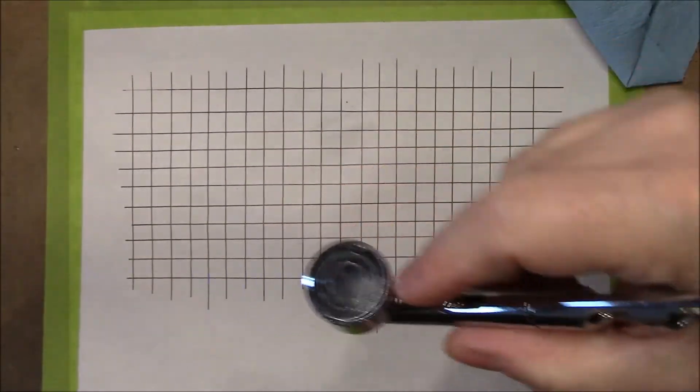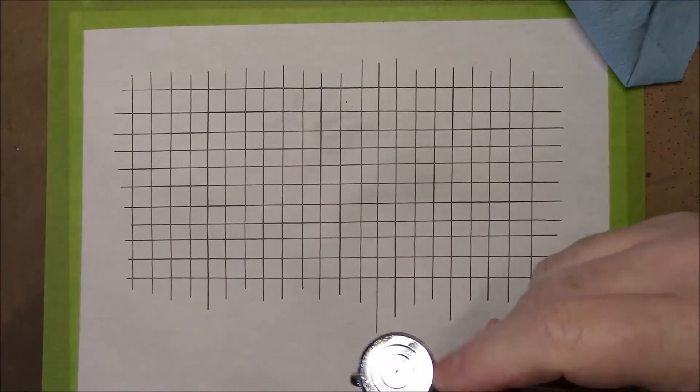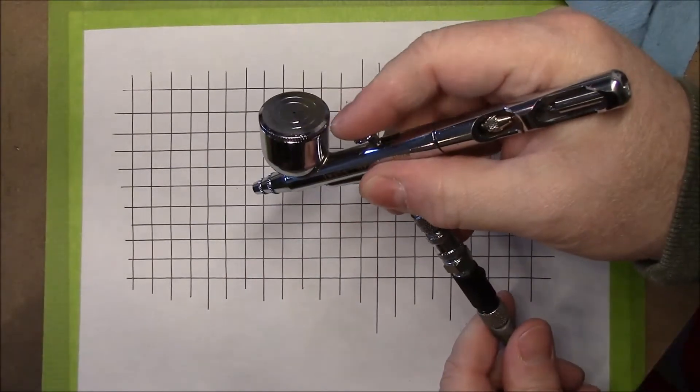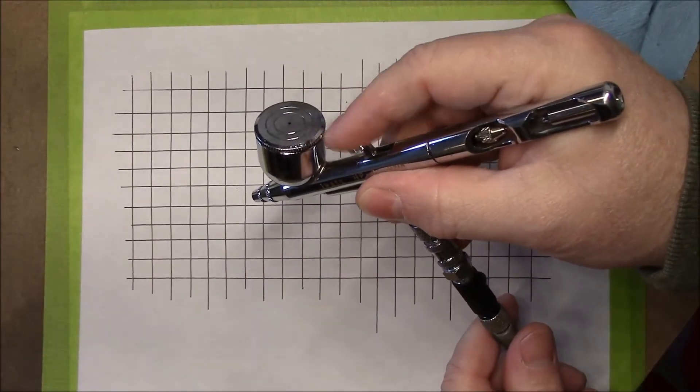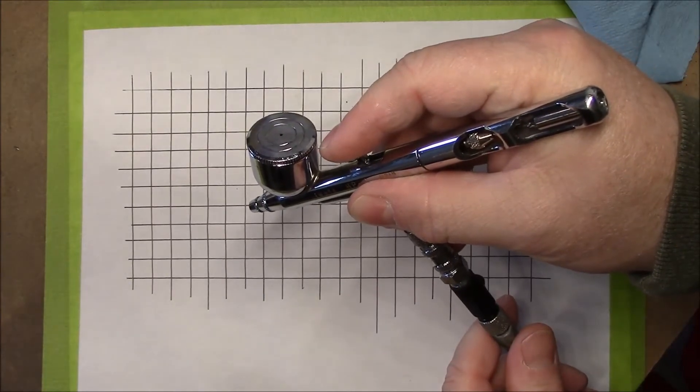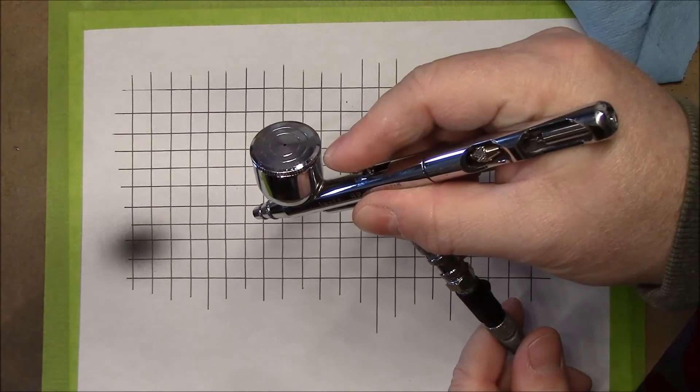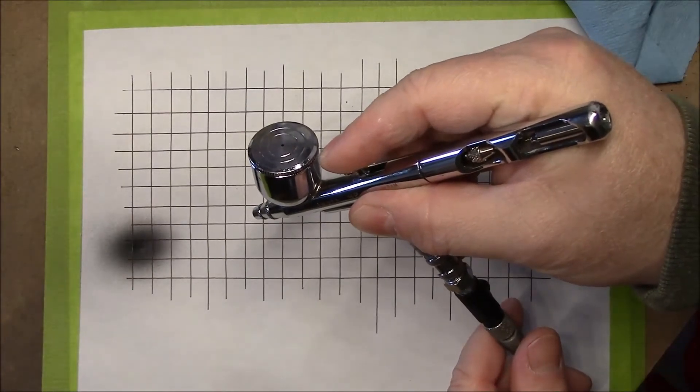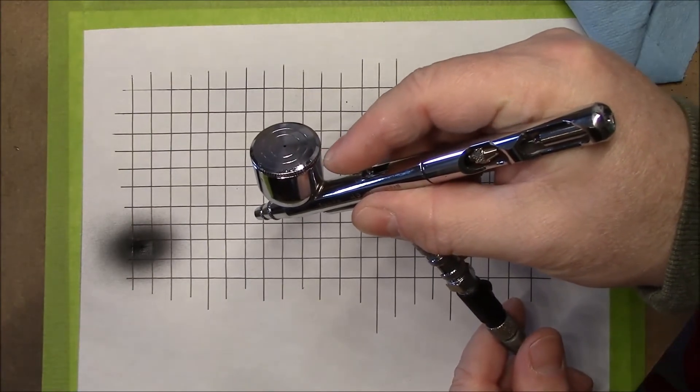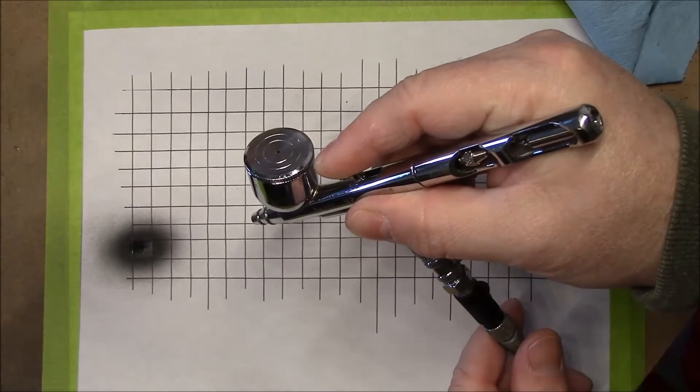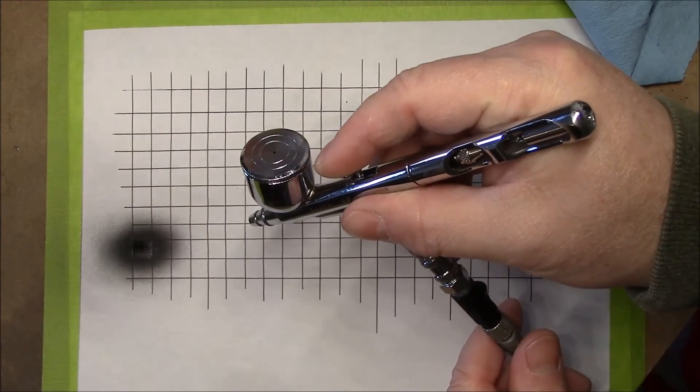And then practice with the trigger. Get a feel for it. Pull, push your trigger down and pull back on the trigger a little bit and you'll see paint starts to come out. Boom. There you go. And get used to this action right here that I'm doing. I'm pulling trigger back just enough to get paint and then I'm rocking it back forward. But I'm keeping the air on.